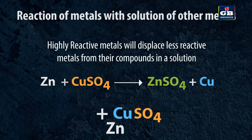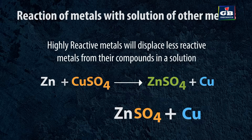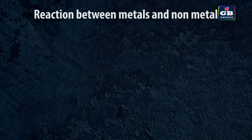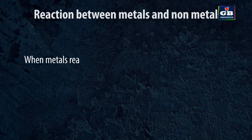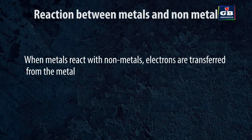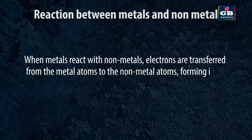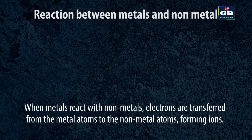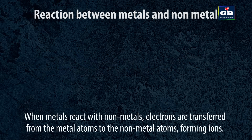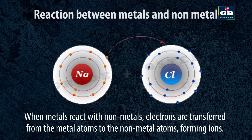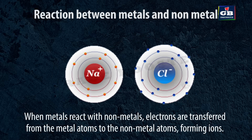Here, zinc is more reactive than copper as it is higher in the reactivity series. Reaction between metals and non-metals: when metals react with non-metals, electrons are transferred from the metal atoms to the non-metal atoms, forming ions. The resulting compound is called an ionic compound. For example, the electrons of sodium are transferred to chlorine, forming an ionic compound called sodium chloride.